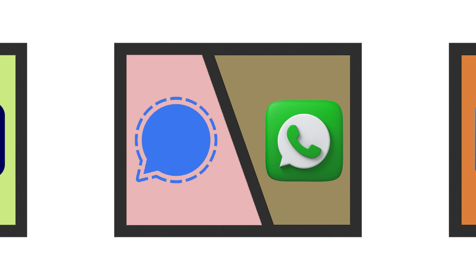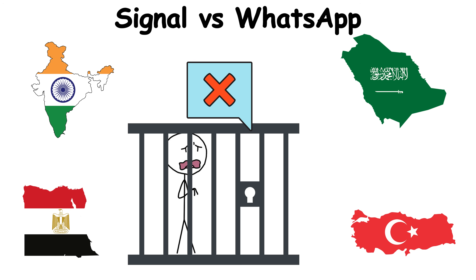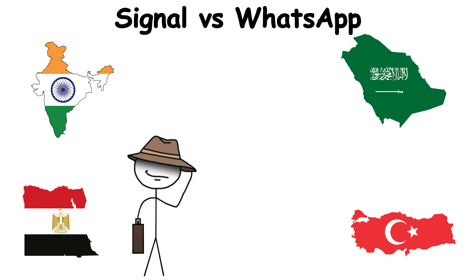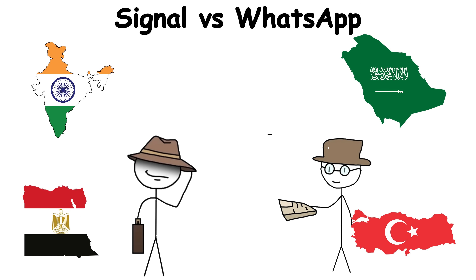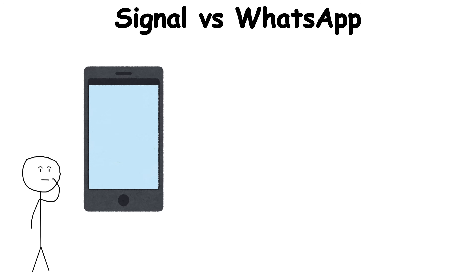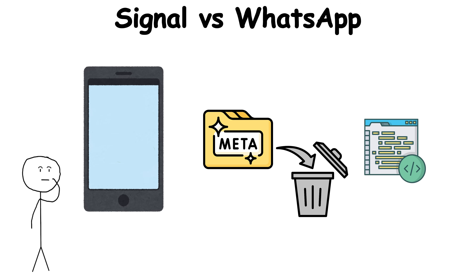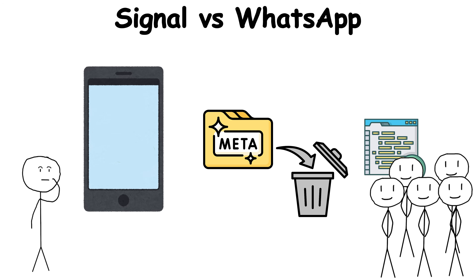Signal vs. WhatsApp: In some countries, the wrong message can land you in jail. That's why activists and journalists lean on Signal. It's a fortress of privacy — messages vanish, metadata isn't stored, and the code is open for anyone to inspect.